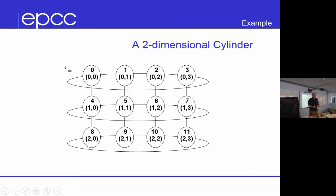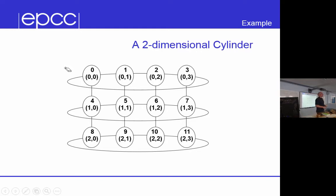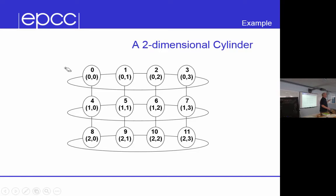That's what we know ourselves about the program, because that's the way we wrote it. In this example we can see we have nearest-neighbor communications, and we also have what's called periodic boundaries in one dimension and not in the other. So rank 0 will send messages to rank 3, and rank 3 will send messages to rank 0, but rank 0 won't send messages to rank 8, and vice versa — for this particular scientific simulation, this is the way you've set it up.